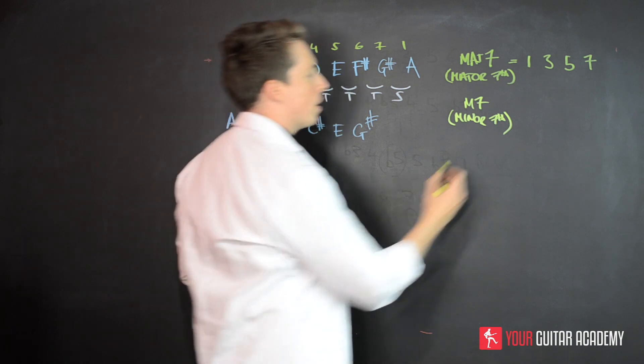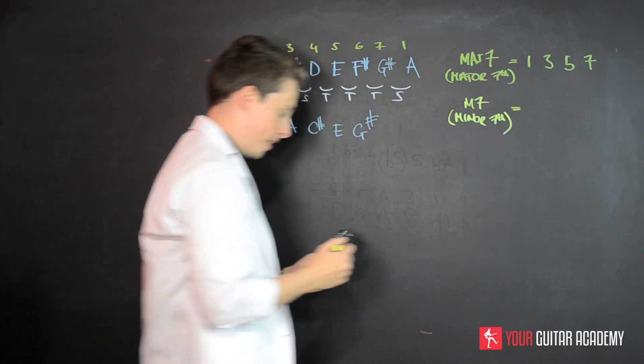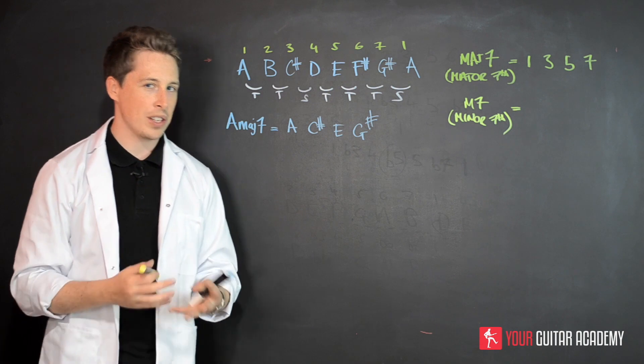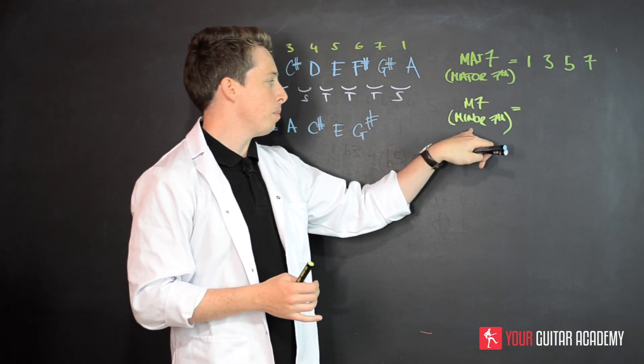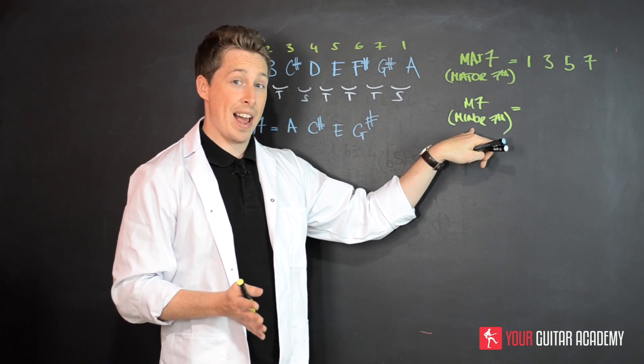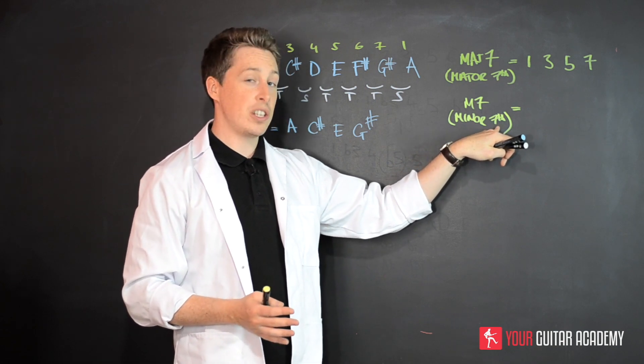So what's the formula for a minor seventh chord? Hopefully you guys can try and work this out. The minor part of this chord, so this part, is the minor triad. The seventh is the additional seventh note.